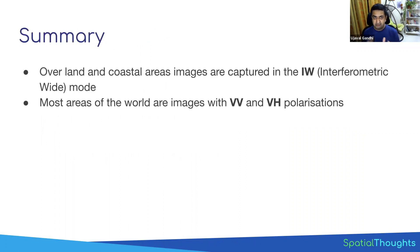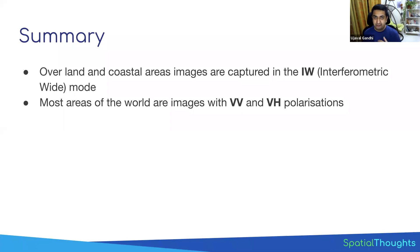For flood mapping, what you need to remember is that most of the world is captured in IW mode, and most of the world is captured in VV and VH polarization. We'll apply those filters on our data and use that dataset. If you are in different parts of the world, you may have additional products available, and this map shows exactly what kind of products are available at what frequency and modes.